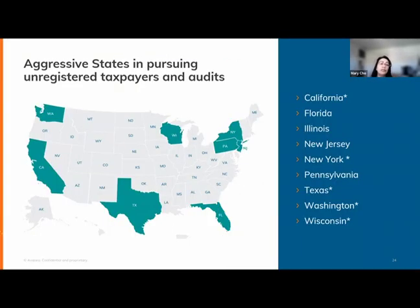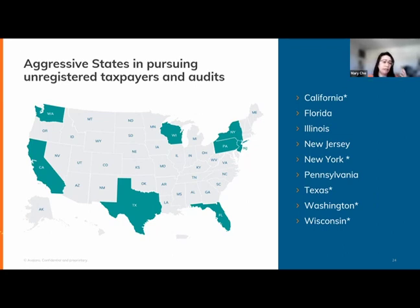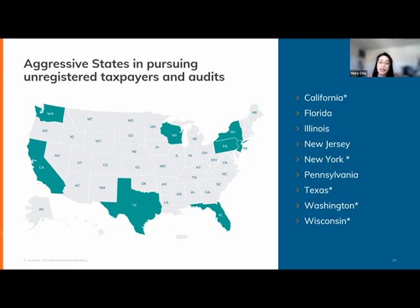Based on experience from consulting and nearly 3,000 customer calls at Avalara, the most aggressive states are California, Florida, Illinois, New Jersey, New York, Pennsylvania, Texas, Washington, and Wisconsin. Wisconsin stands out — it's in my top three for customers being contacted for tax discovery or audits. It's super aggressive.